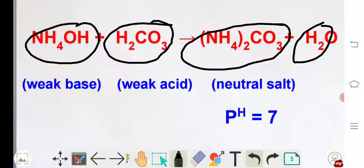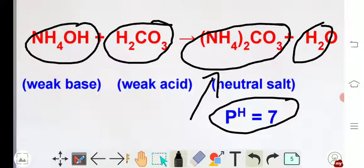So when we try to make the aqueous solution of this ammonium carbonate then its pH value will be 7. It means it is neither acidic nor basic that's why it is neutral and the neutral compound or the neutral substance always shows pH value of 7.